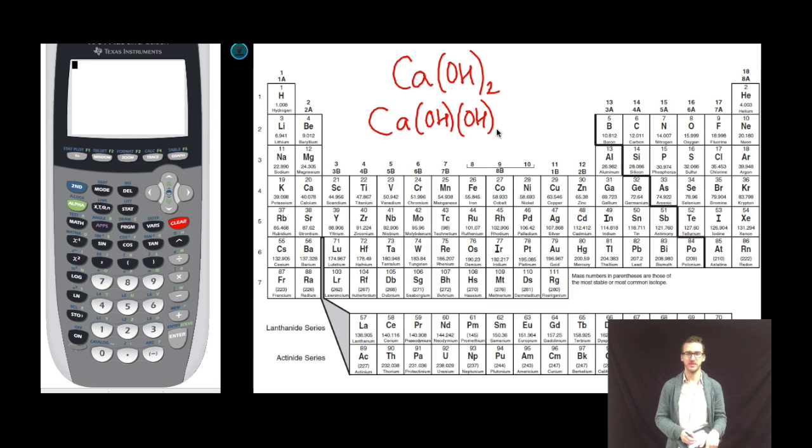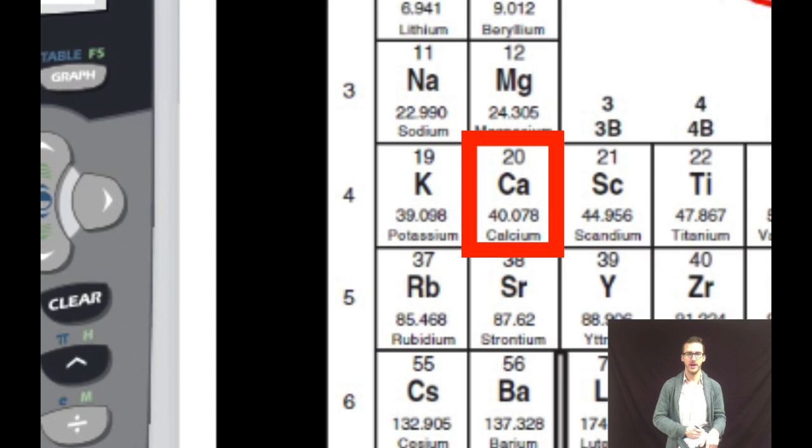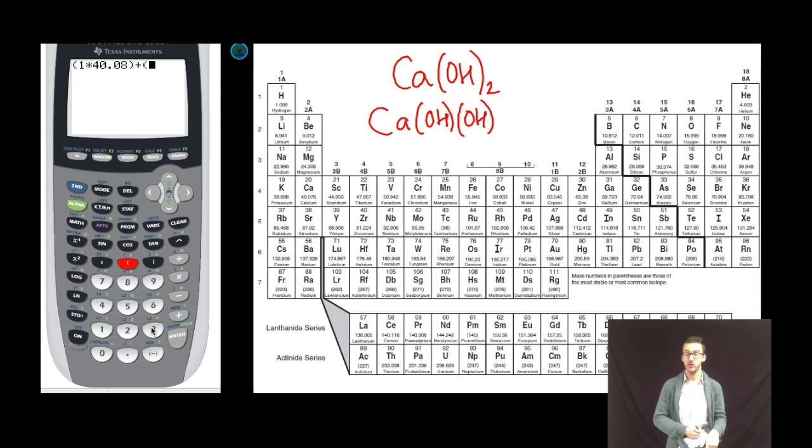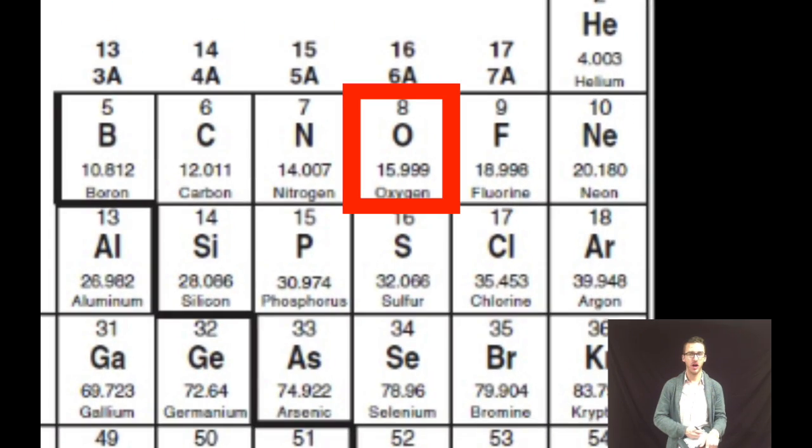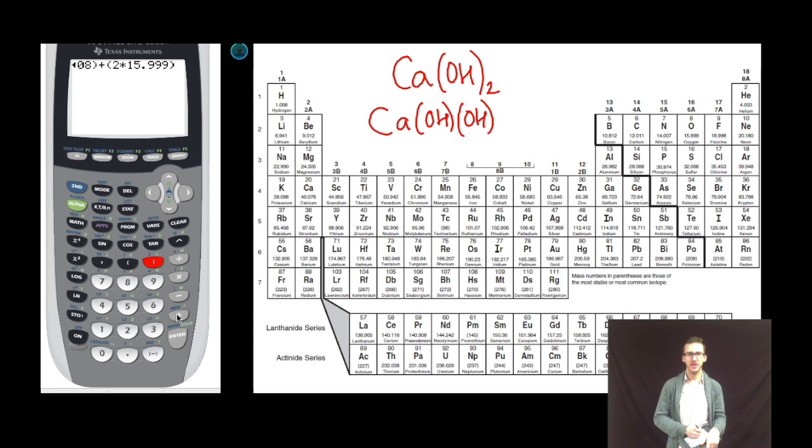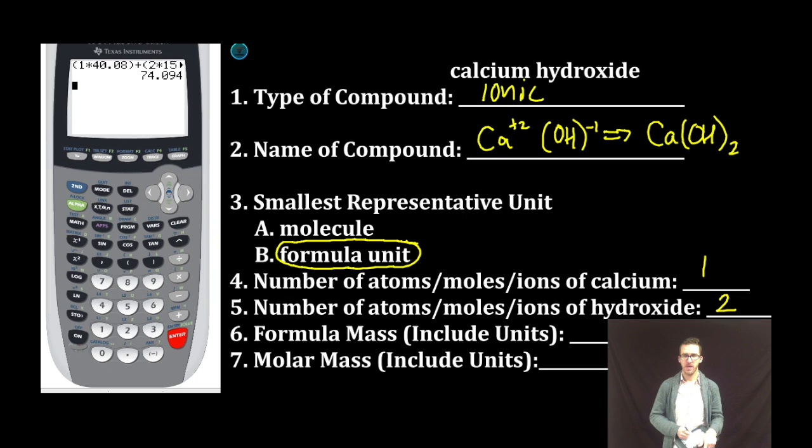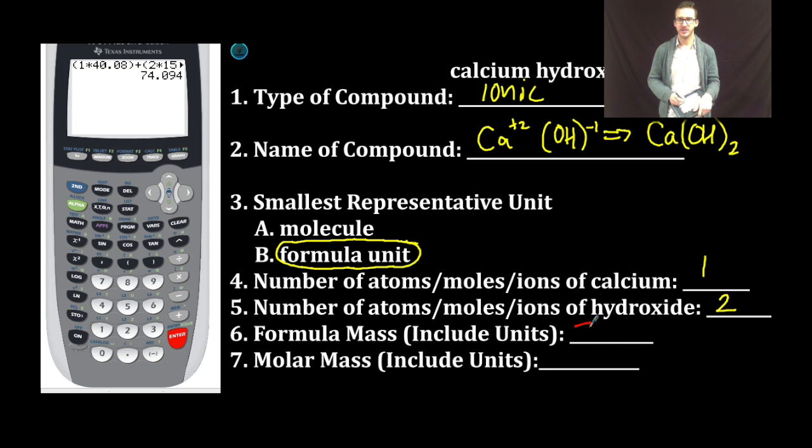So as I determine the total mass of this compound, I'm going to take 1 times the mass of calcium, because I have 2 oxygens in total, and then I'll add to that the mass of 2 hydrogens. So as we think about our formula mass, or the mass of all of these things combined, we get 74.094 amu for our formula mass, and then recognize numerically it's exactly the same as our molar mass, but units are grams per mole.